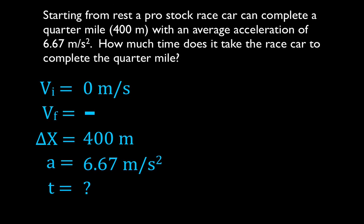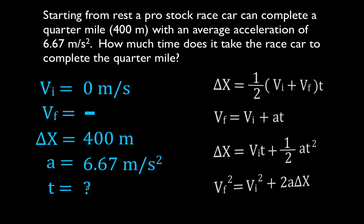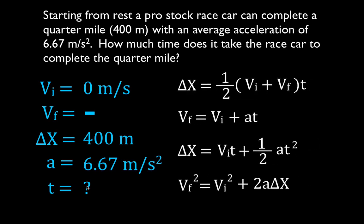Once again, you'll notice you're given three of the variables and asked to solve for the fourth. Get out the kinematic equations. Each kinematic equation has four variables in it, so if you know three, you can always solve for the fourth. We need to figure out which equation to use. I like to start by looking for an equation that has the variable I'm trying to find — that is, the time.